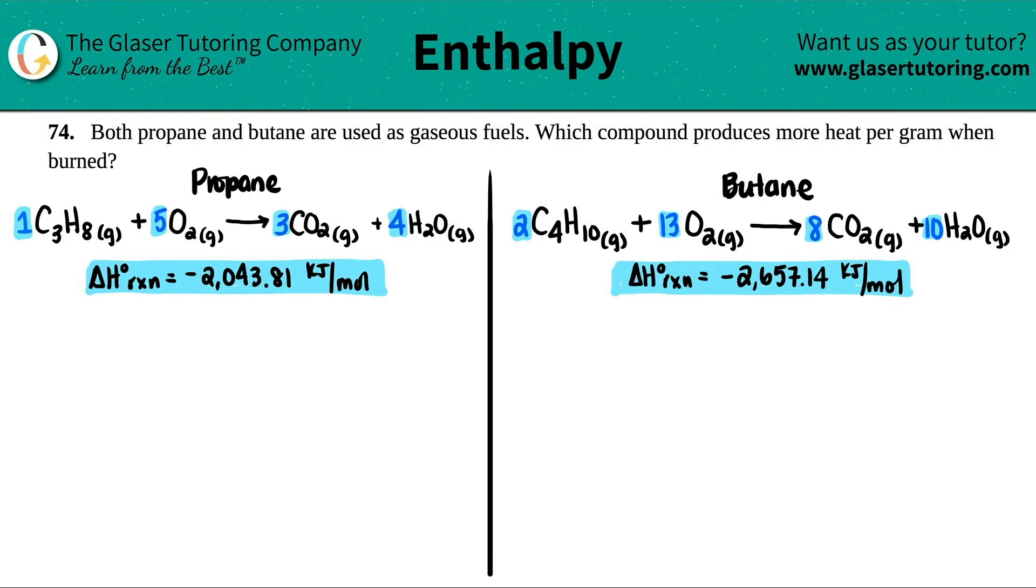Number 74. Both propane and butane are used as gaseous fuels. Which compound produces more heat per gram when burned? Great question.